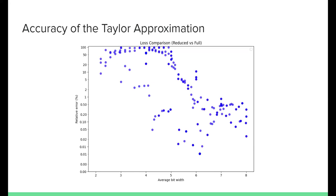A more detailed description shows the relative error of the Taylor approximation for different assignments along the Pareto frontier, using different models and constraints. For bit assignments averaging six, seven, or eight bits the relative prediction error is very good. However, for more aggressive assignments the Taylor approximation predictions deteriorate significantly.